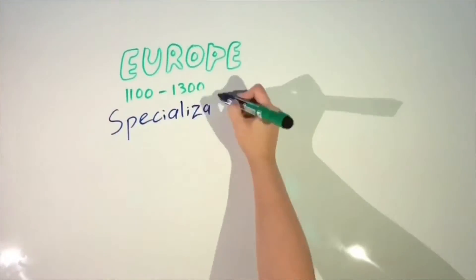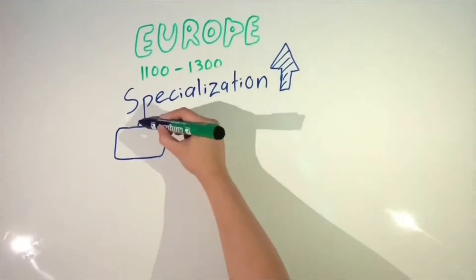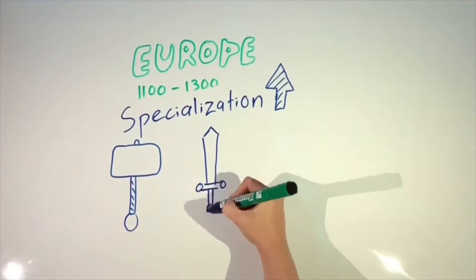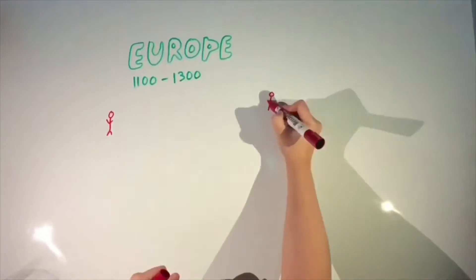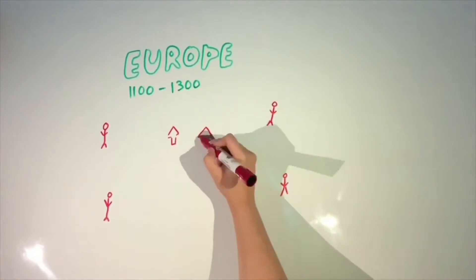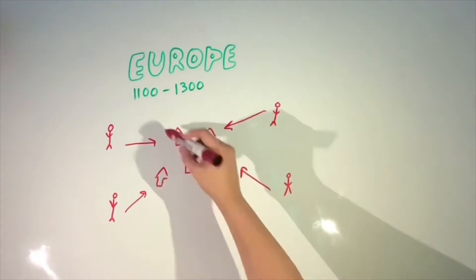Around this time period, specialized professions were on the rise and more people started to become artisans, blacksmiths, and merchants. Cities became densely populated and good hygiene was not practiced.